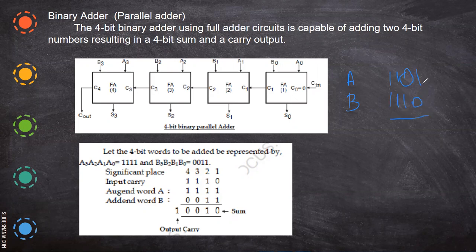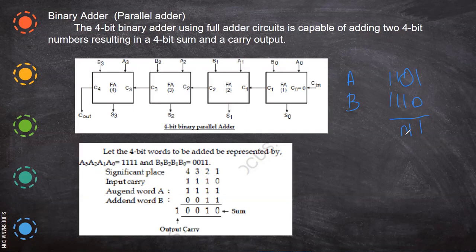What we have seen in the half adder is how to add these two bits. What we have seen in the full adder is when you add two bits — for example one plus one is zero with a carry of one, then one plus one plus one is one with a carry — how to add these three bits. That is what we have seen in the full adder.